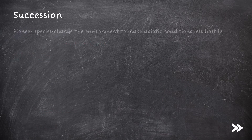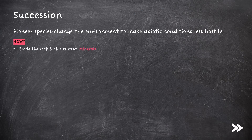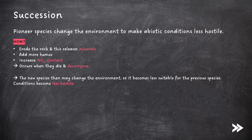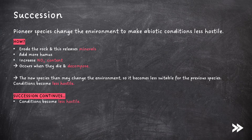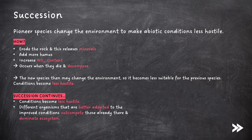Pioneer species change the environment to make abiotic conditions less hostile. For example, they may erode the rock, releasing minerals, and they add humus and increase nitrate content when they die and decompose. The new species may then change the environment so it becomes less suitable for the previous species. Conditions become less hostile and succession continues — different organisms that are better adapted to the improved conditions out-compete those already there and dominate the ecosystem, and more species move in, increasing biodiversity.